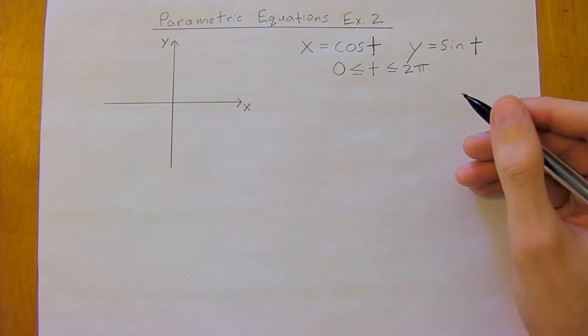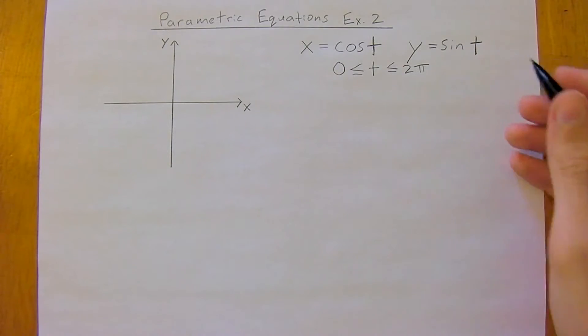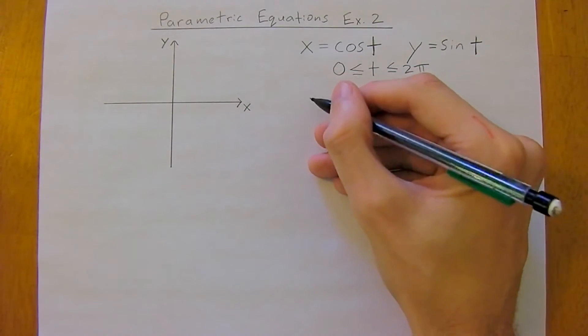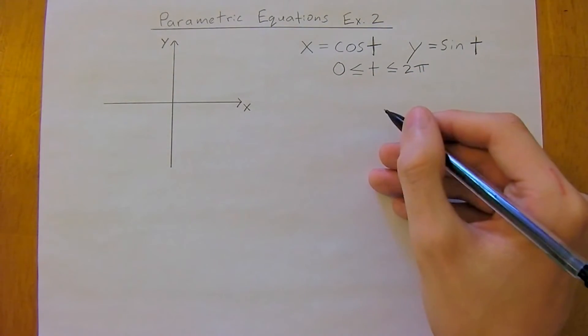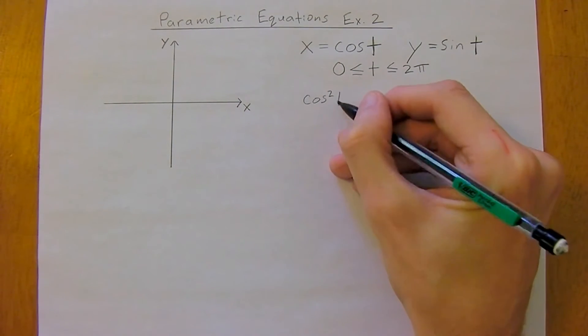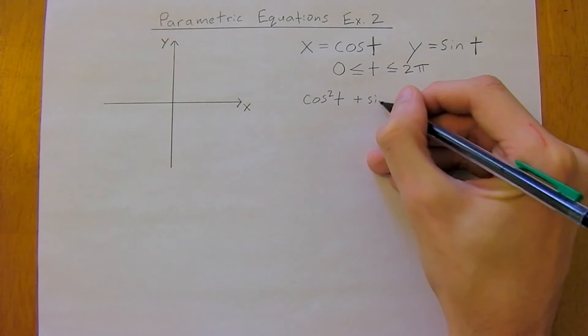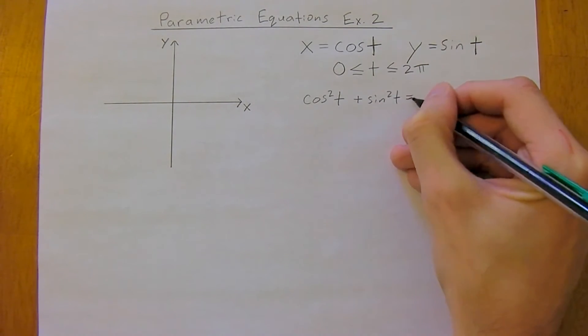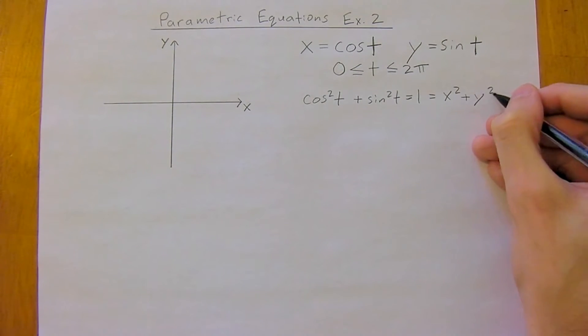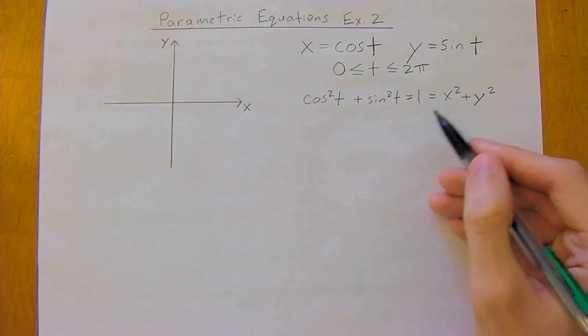In this example, if we plot the points, we'll start to see that the curve is actually a circle, and you may remember that this is a unit circle. So actually, we can figure this out by doing cosine squared t plus sine squared t, which we know is equal to 1, which equals x squared plus y squared. So this is actually a circle with a radius of 1 here.